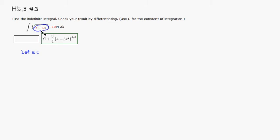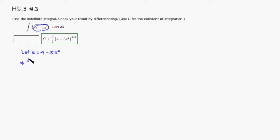So u is going to be 4 minus 5x squared. In your mind you can do a mental calculation — the derivative of this is negative 10x, which is sitting right here in the integrand, so this is probably the right choice.